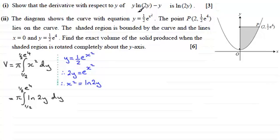Now this is where the first part comes in useful. We had to show that by differentiating y times the natural log of 2y minus y. It came to the natural log of 2y. So if we differentiated this and it gave us this then integrating the natural log of 2y must give us y times the natural log of 2y minus y. So that's what I'm going to put in here. That this is pi times and then we can fill this in with y times the natural log of 2y minus y. And that goes then between the limits of one half and a half e to the power 4.